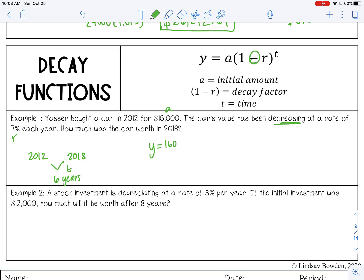So Y equals 16,000 times 1 minus - we need to change that 7% to a decimal, so 2 to the left, 0.07 to the 6th power. Let's simplify inside parentheses first. 1 minus 0.07 is 0.93 to the sixth power. And then from there you can use your calculator. So 16,000, parentheses, 0.93 to the sixth power. And that gives me $10,351.84.